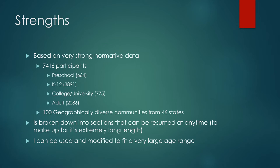Let's talk about some strengths of this test. This test is based on very strong normative data. The makers put a lot of time, energy, and money into making sure this test was normatively strong, valid, and accurate. When norming this assessment, 7,416 participants were used: 664 were preschool age, 3,891 were in grades K-12, 775 were college students, and 2,086 were adults. These participants came from 100 geographic locations, 6,000 communities, and 46 states.